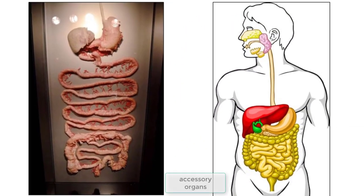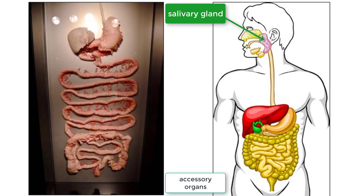Next, let's discuss the accessory organs. The first would be the salivary glands. When you are chewing your food, these glands release saliva that contains an enzyme called amylase, which begins to break down carbohydrates like starch while you are chewing.